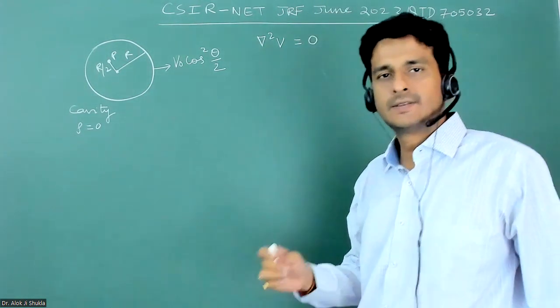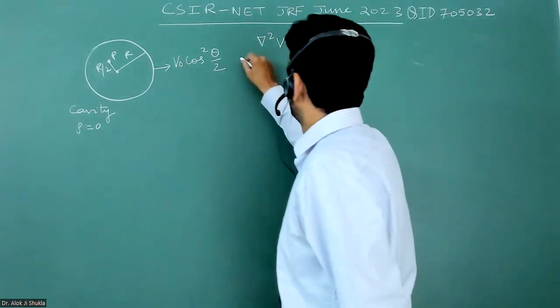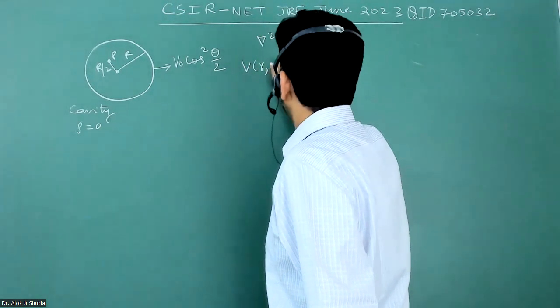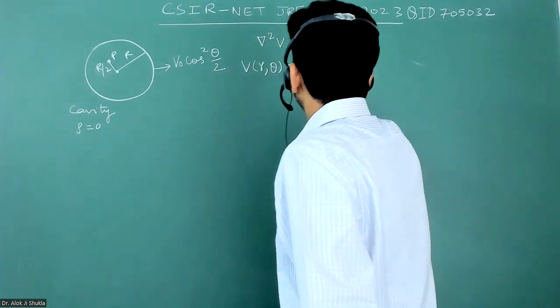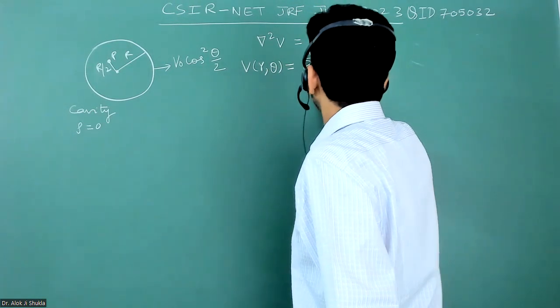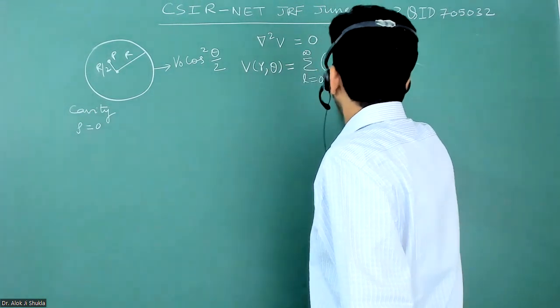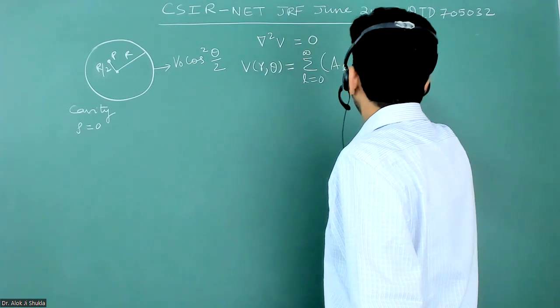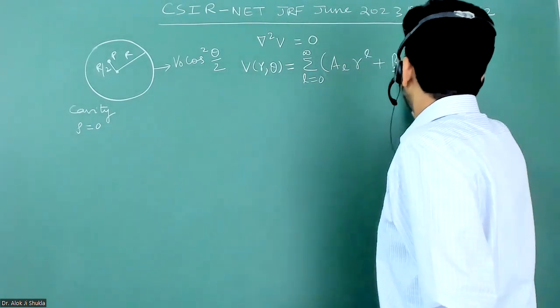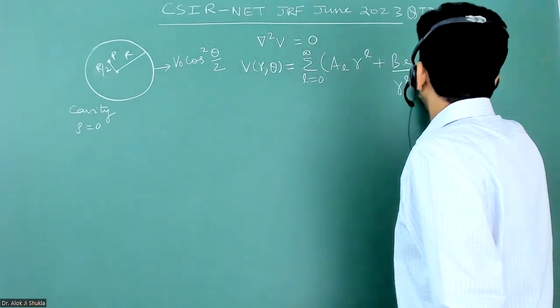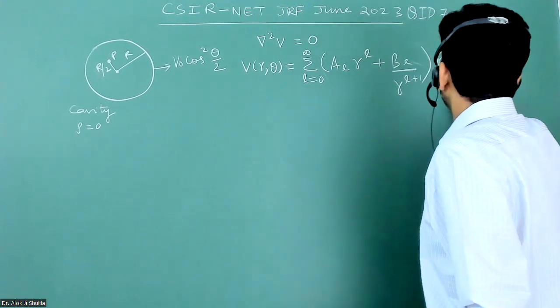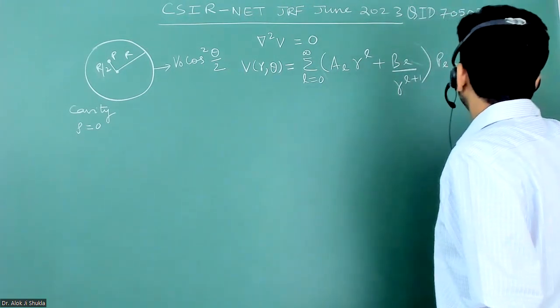If we solve it for a spherical polar coordinate, I have taught you this in detail in the class. This is equal to summation L equals 0 to infinity: AL R to the power L plus BL upon R to the power L plus 1, times PL cos theta, which is Legendre polynomial.